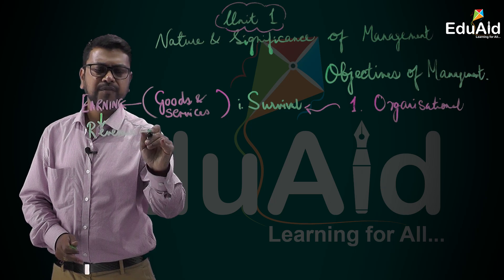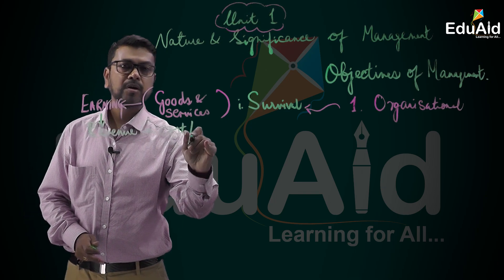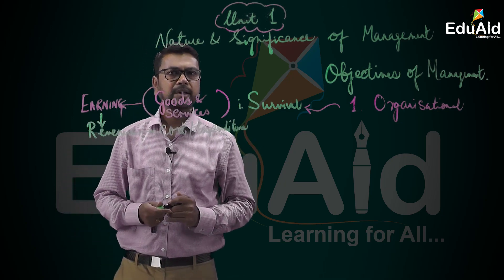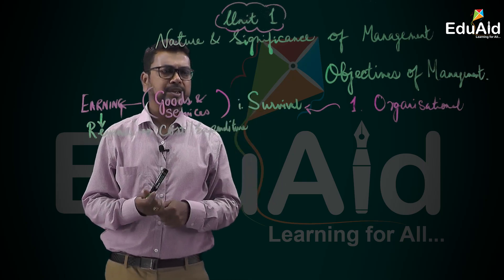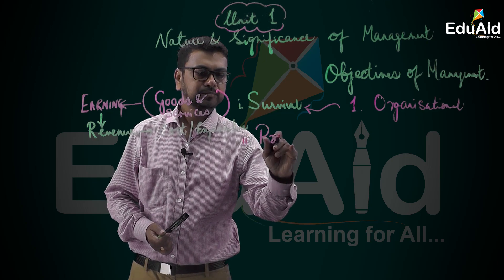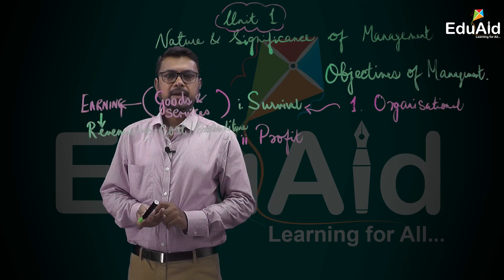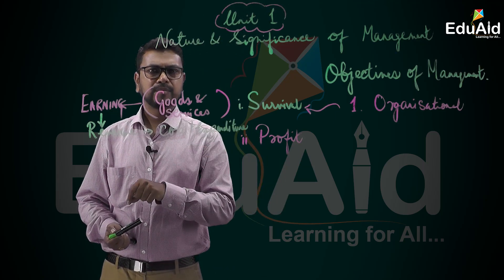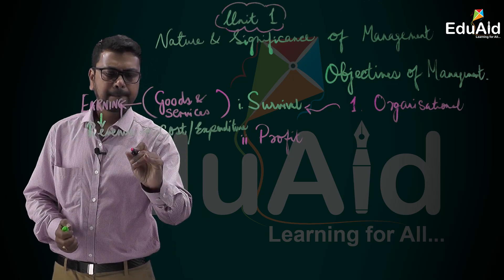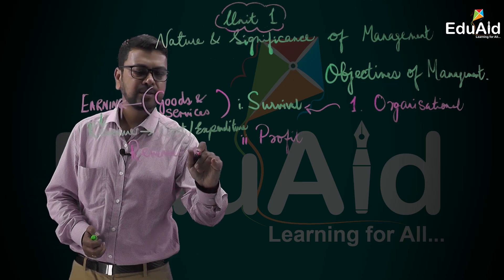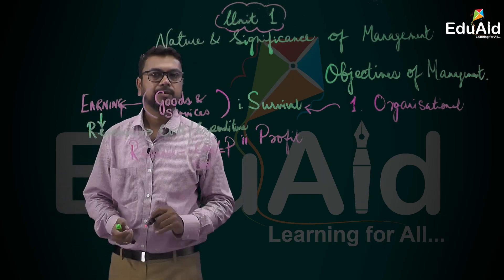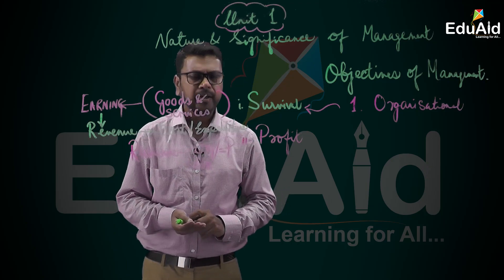Revenue should first be sufficient to cover the cost or expenditure. The second objective is profit. Revenue comes from selling goods and services, so revenue less expenditure or cost will give you profit.